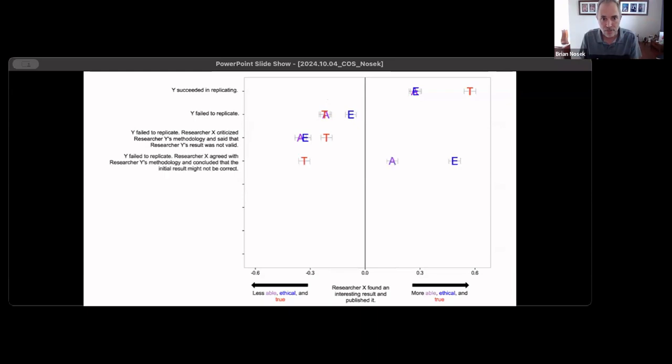Now the scenario changes a little bit. Researcher Y fails to replicate that finding. Researcher X says, hmm, I agree with their methodology and their conclusion. Maybe my original result was wrong. The respondents perceive the truth value to go way down in that case—they both agreed that original finding wasn't correct. But the perceptions of that original researcher X's ability and ethics improve compared to baseline. Even though researcher X's finding has failed to replicate and they agree, maybe I was wrong, the perception of their ability actually goes up and their ethics goes way up.